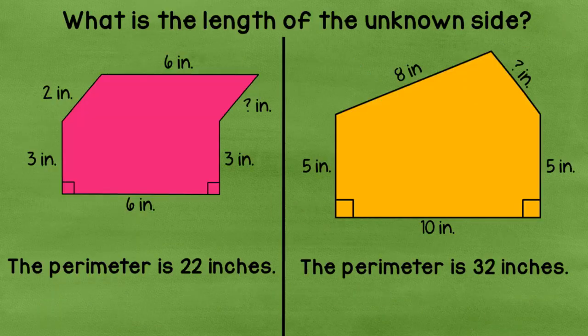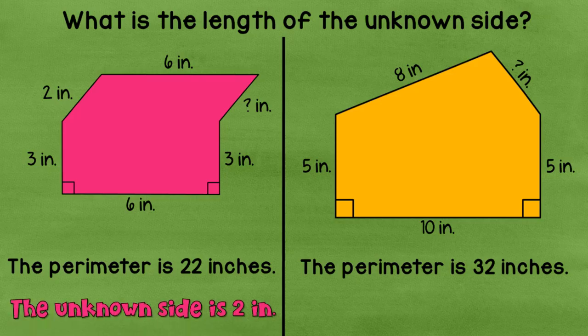Let's take that same concept and apply it to these two polygons. The first one, the perimeter of the pink polygon, is twenty-two inches. So we will add up what we know to find the unknown side. So I'm going to start by doubling six plus six is twelve. Twelve plus three is fifteen. Fifteen plus three is eighteen. And eighteen plus two is twenty. So all of my known sides are twenty. So twenty plus what equals twenty-two? Well, the answer to that would be... Did you say two? If you said two inches, you're right.